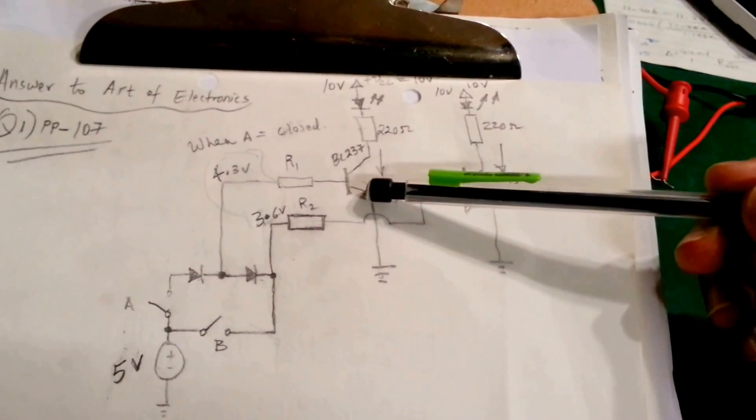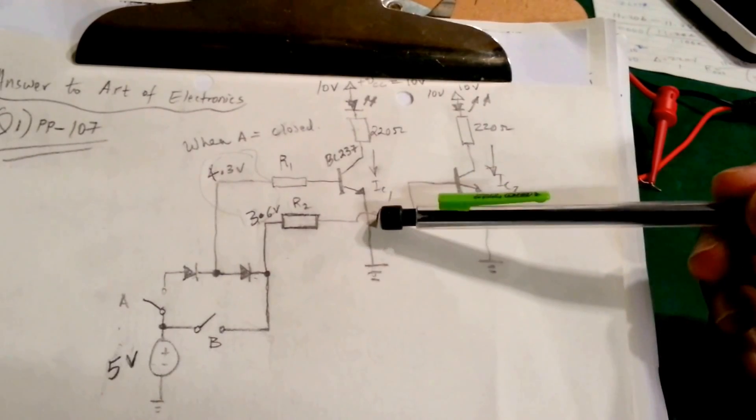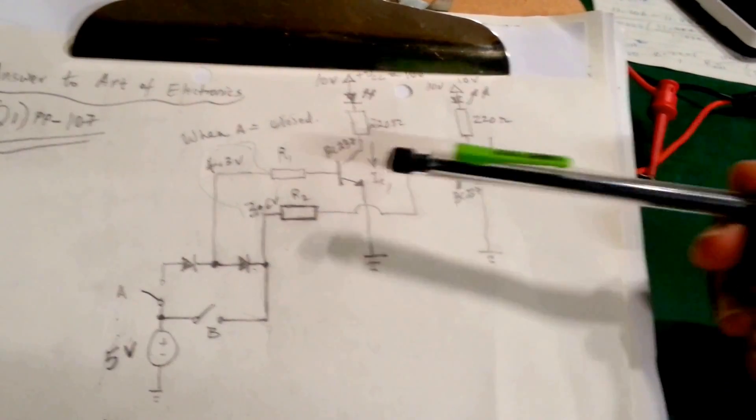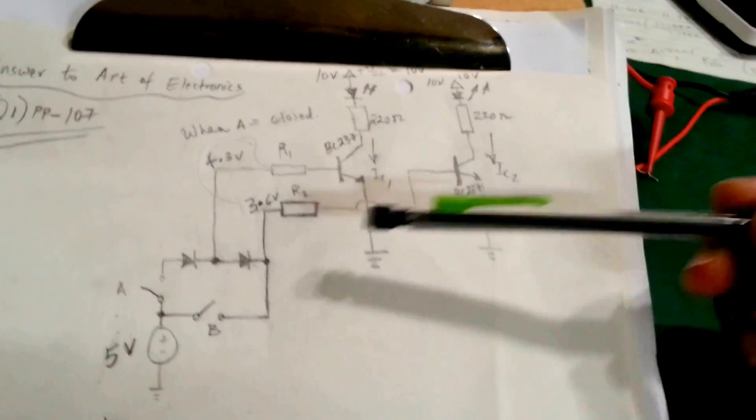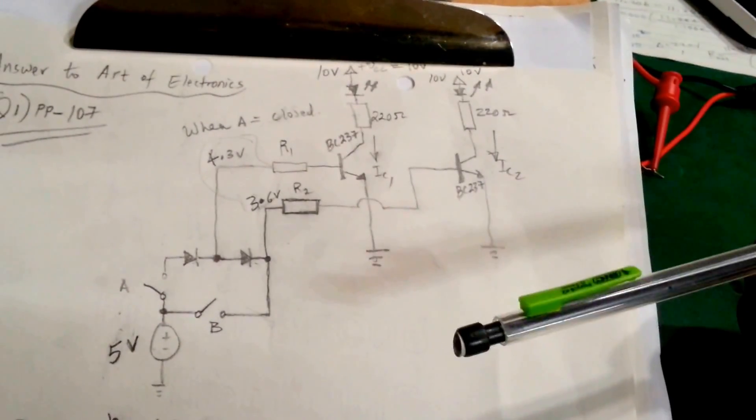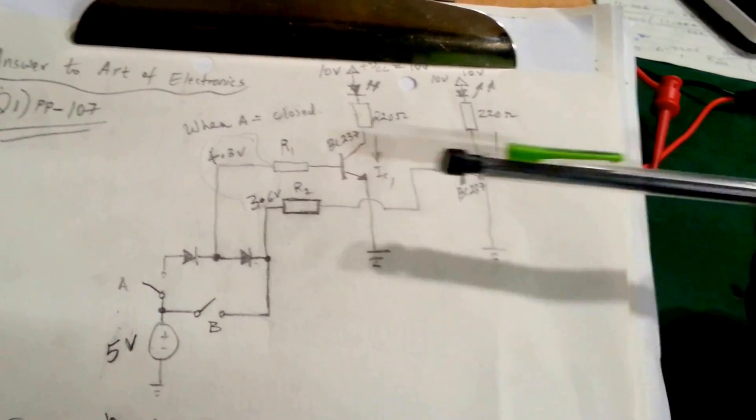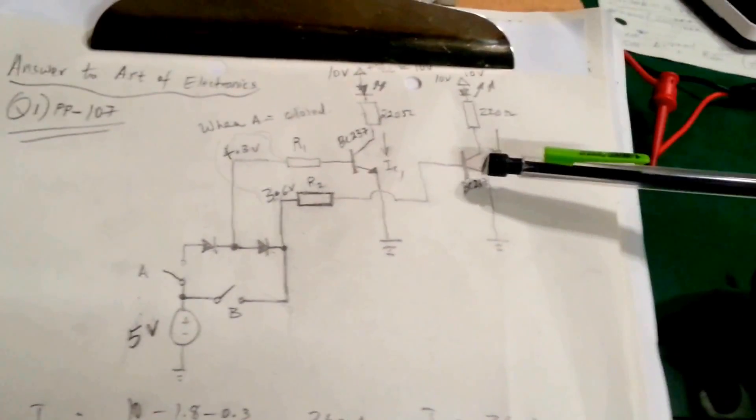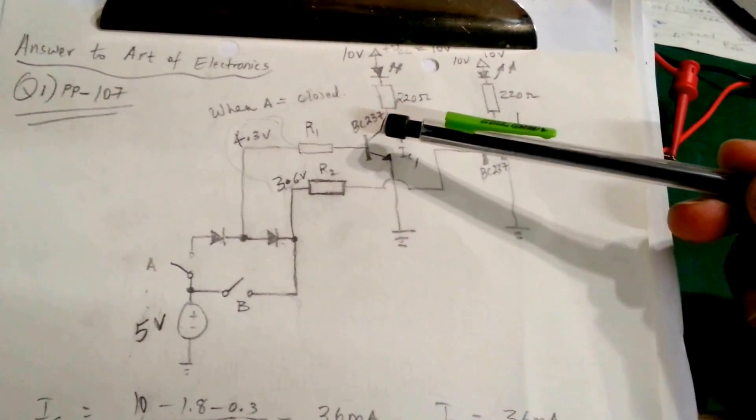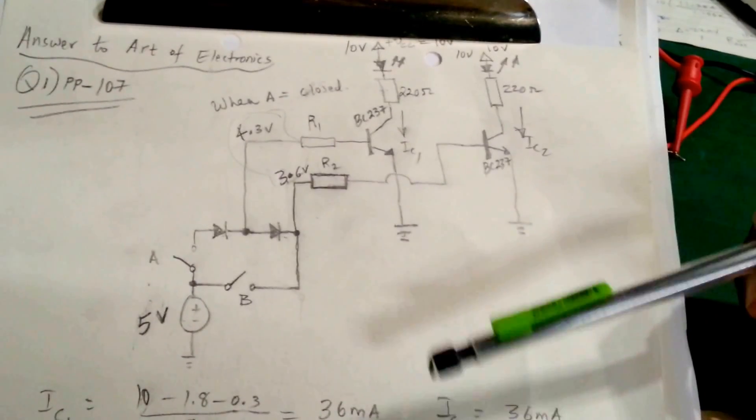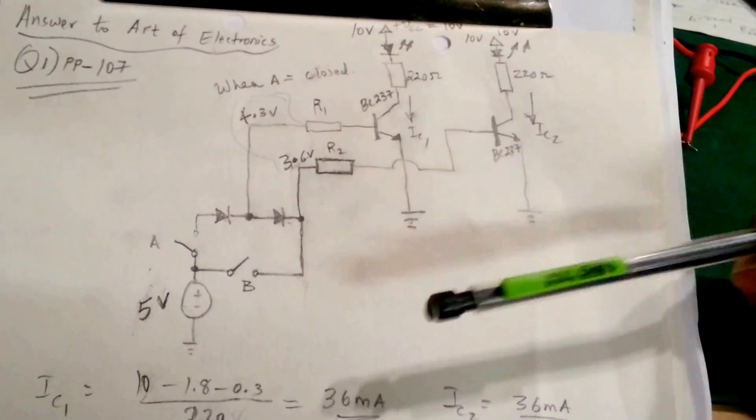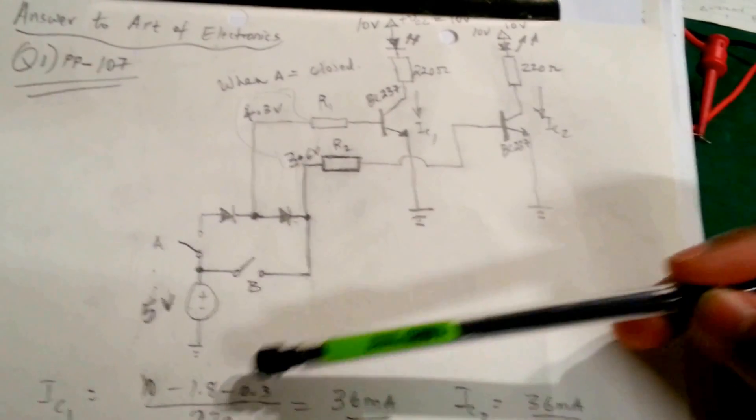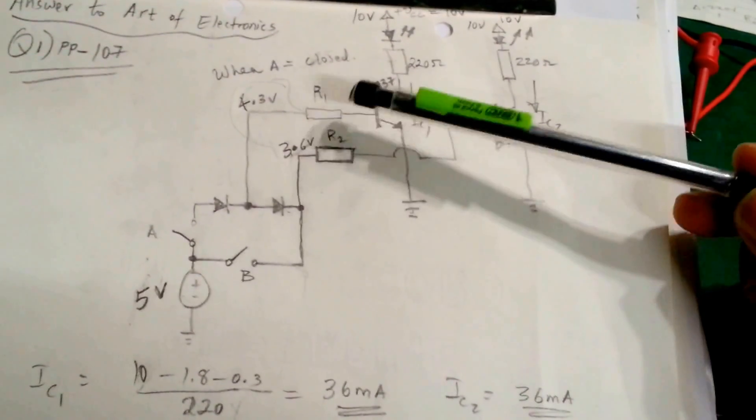NPN transistors are used for switching loads to ground, whereas if you were using PNP, they would be used to switch loads to high side. The NPNs here specifically are used for low side switches, and that's what the question was asking in the book. The type of device I'm using is BC237. I have 10 volts to supply my load.